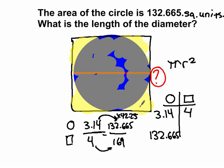So, what number squared is 169? Or you can take the square root of 169 and that is 13. Therefore, the diameter of the circle must be 13 so that the area of the circle is 132.665 square units.